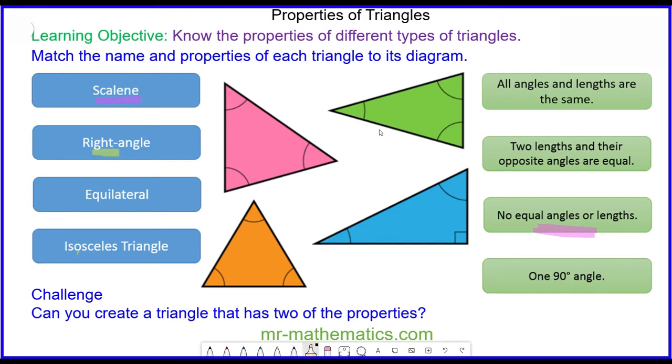A right angle triangle is a triangle with one 90-degree angle. It could also be scalene but it does have one 90-degree angle.